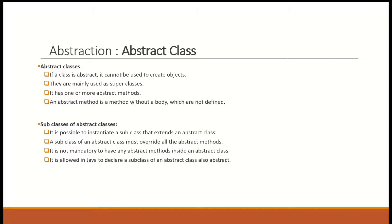Abstract class: if a class is abstract, it can't be used to create objects. Abstract classes are mainly used as superclasses. An abstract class contains abstract methods — a method with no implementation, only the signature, only the method heading, nobody. When you have a method without an implementation, it is called an abstract method. So, where do you write the implementation? In the subclasses. The abstract class needs to have subclasses that implement the abstract methods. That means abstract class is definitely a superclass.